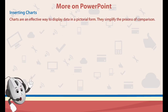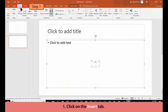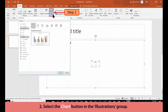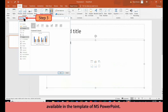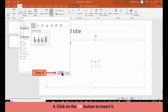Inserting Charts. Charts are an effective way to display data in a pictorial form. They simplify the process of comparison. PowerPoint offers different types of charts such as column, line, pie, bar and area. Follow these steps to insert and view a chart on the slide. 1. Click on the Insert tab. 2. Select the Chart button in the Illustrations group. 3. An Insert Chart dialog box opens on the screen which will display various charts available in the template of MS PowerPoint. Select the type of chart you want. 4. Click on the OK button to insert it.